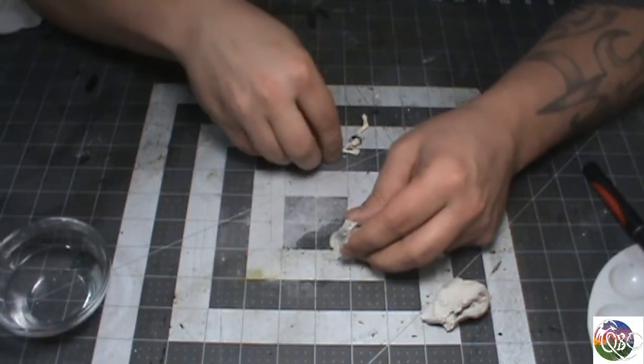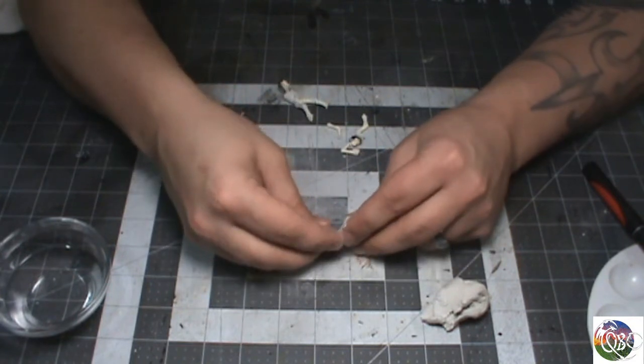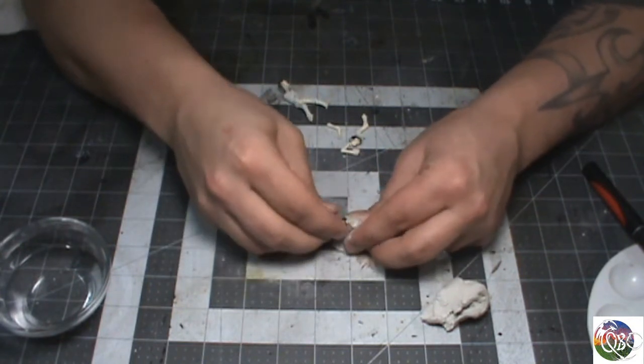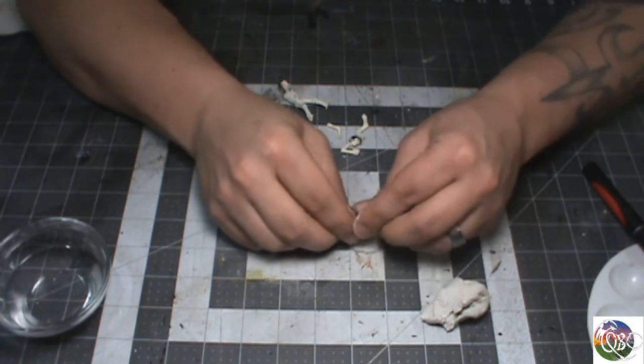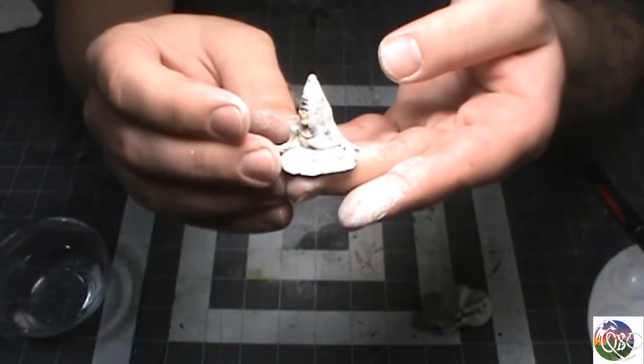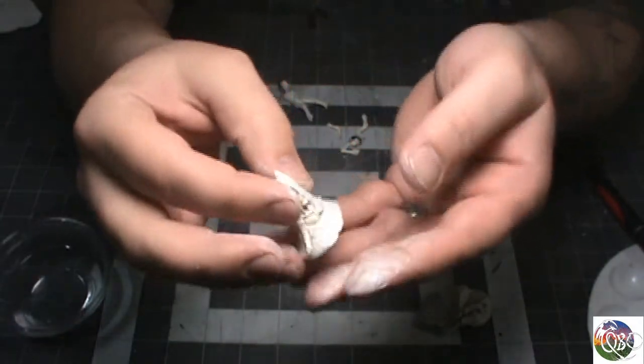Once you've got them all painted up and they're pretty much dry, just go ahead and squish out some more clay. Smash the skeleton into it and build the stalagmite around him. Put some random bones in there, smash it however you want.